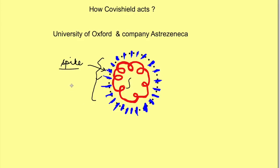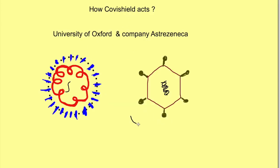What is the mechanism by which Covishield prevents this? Covishield uses another virus — the adenovirus. This is a harmless virus that mostly causes a common cold which we routinely experience. It is a modified adenovirus which has lost its ability to multiply in the body.